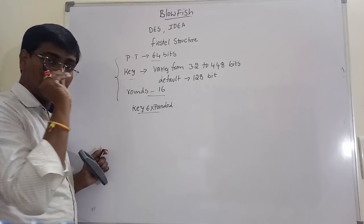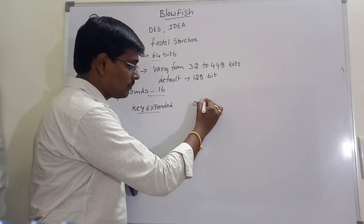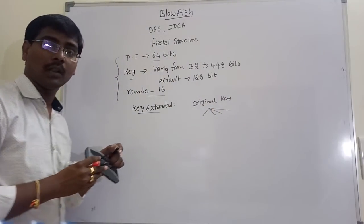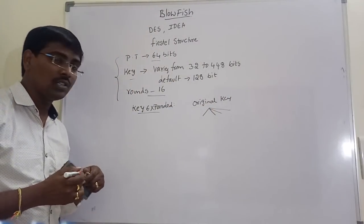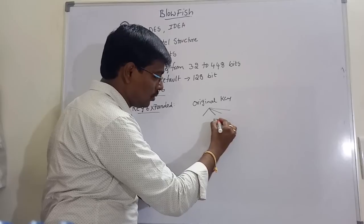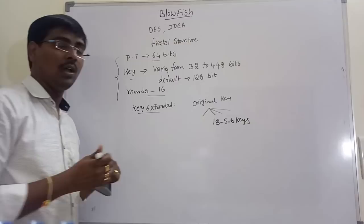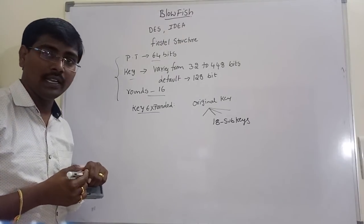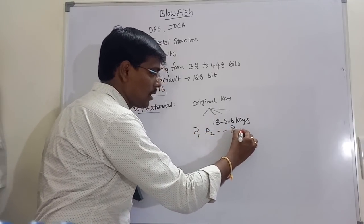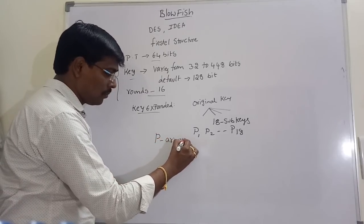The expansion of the key works as follows: our original key is divided into a different number of subkeys. Generally, the key is divided into 18 subkeys, named P1, P2, through P18.